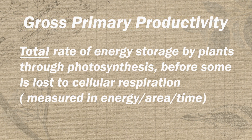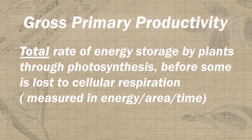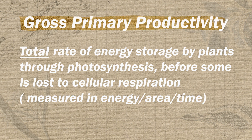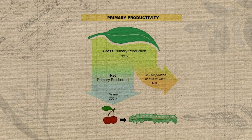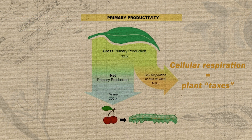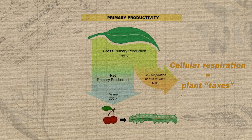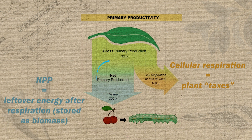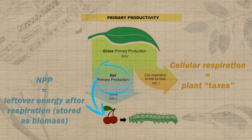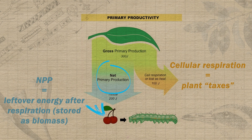The total energy that's produced by plants in a given area over a given period of time is known as the gross primary productivity. But just like you have to pay some taxes out of your gross paycheck, plants also have to use up some of the total amount of energy they generate for cellular respiration. So you can think of net primary productivity as the actual leftover energy that plants have after respiration, which they get to store as new biomass.